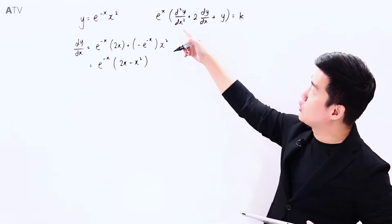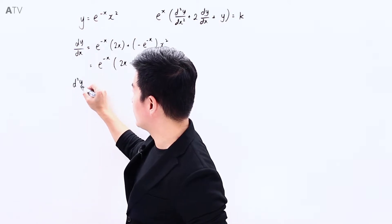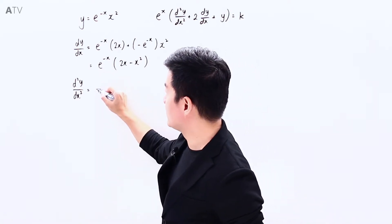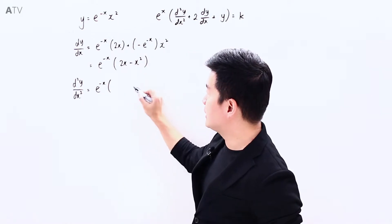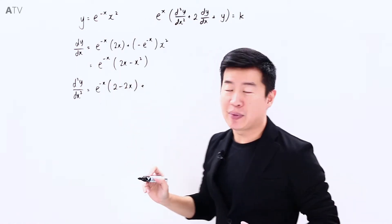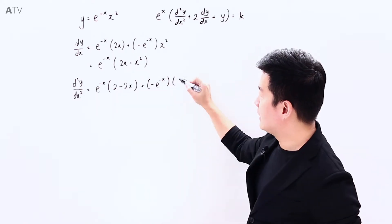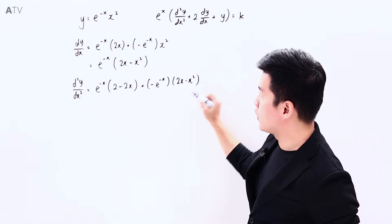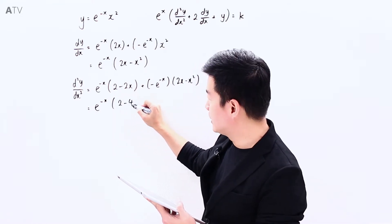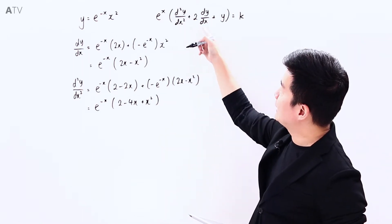Now let's differentiate once more to find d²y/dx², again using the product rule. Keeping e^(-x) and differentiating (2x - x²) gives (2 - 2x); then differentiating e^(-x) gives -e^(-x), keeping (2x - x²) as is. Factorizing out e^(-x) leaves us with e^(-x)(2 - 4x + x²).